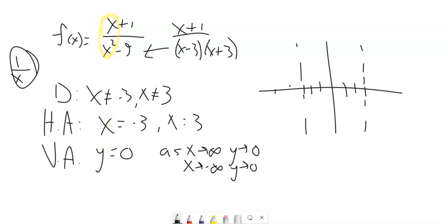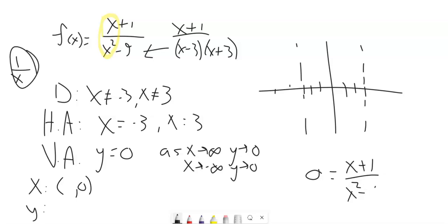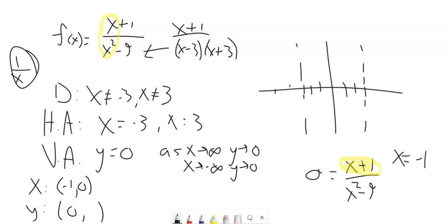For x and y intercepts: the x-intercept is when y equals 0, meaning 0 equals x plus 1 over x squared minus 9. The only way to get an output of 0 is if the numerator equals 0. When x is negative 1, I've got 0 divided by something, so the denominator doesn't matter — the x-intercept is at (-1, 0). For the y-intercept, plug in x equals 0: I get 1 over negative 9, so the y-intercept is at (0, -1/9).